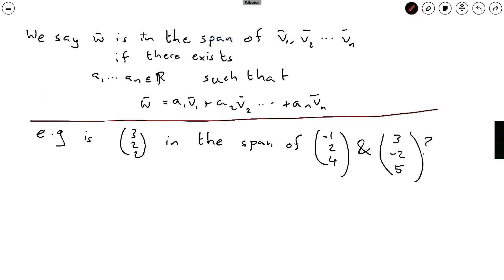So here we've just got the definition first of all. We say that a vector w is in the span of some vectors v1 to v2 up to vn, so this is a collection of n different vectors, if there exists a1 to an, some real numbers such that w is equal to a1 times v1 plus a2 times v2 dot dot plus an times vn.